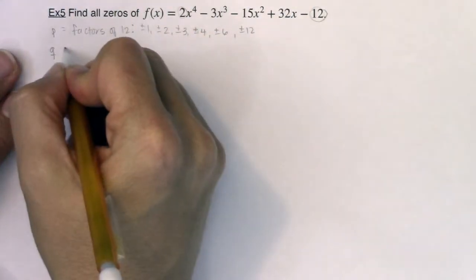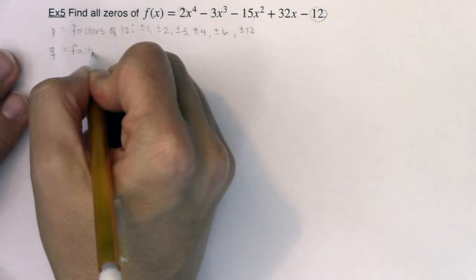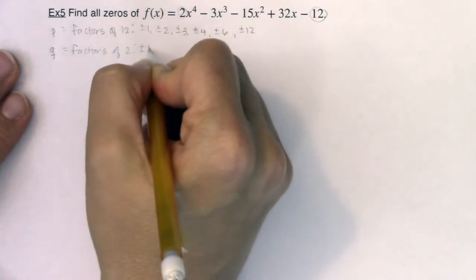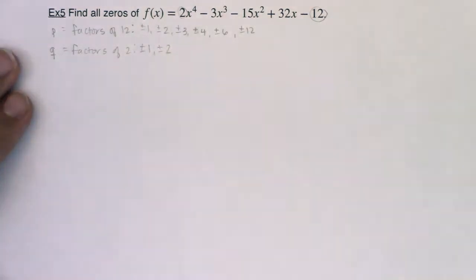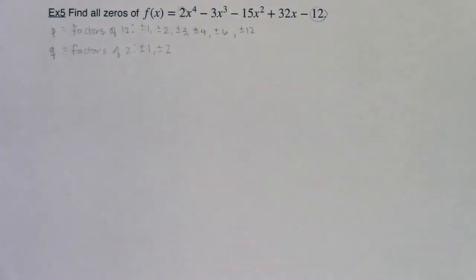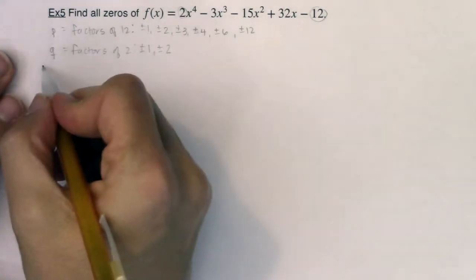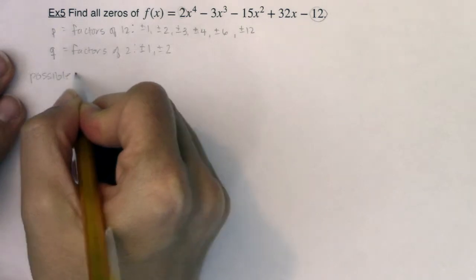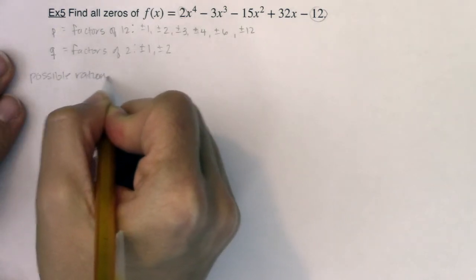And Q is always the factors of your lead coefficient, so in this case it's 2. That's nice, there's only two factors, two integer factors of that. If I want to generate my list of possible rational zeros, let's start generating our list.